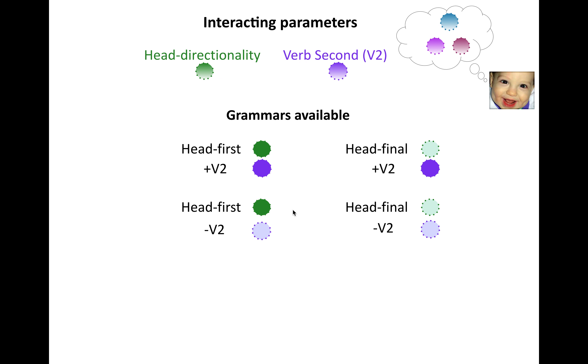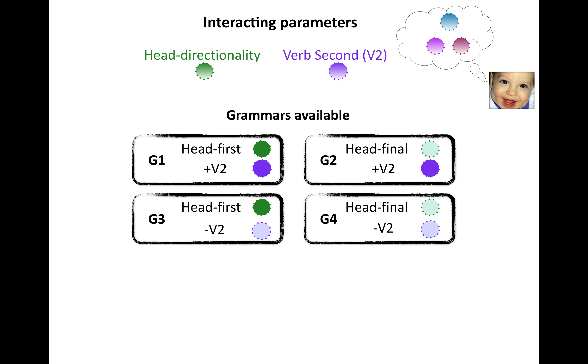So great. What's so hard about this? So if we just have these two parameters, and with each two values, you have four possible grammars with the idea, again, that a grammar is a combination of parameter values. So head first versus head final, verb second versus minus verb second, right? So four possible combinations. Let's just, you know, kind of visualize them this way.